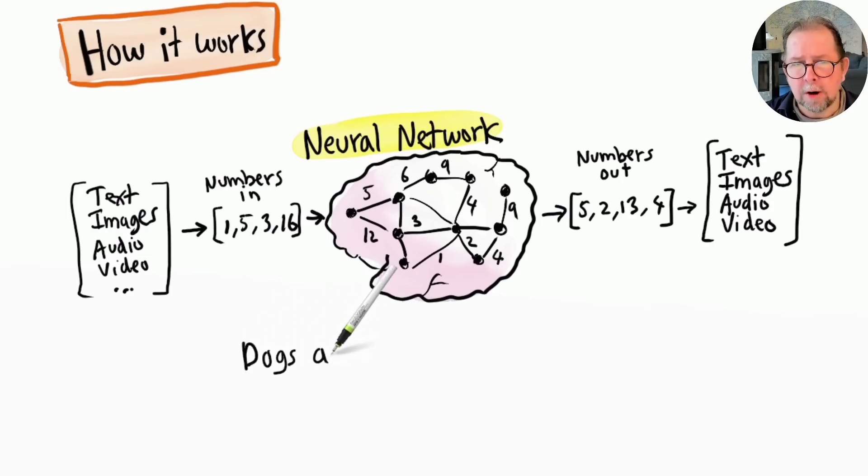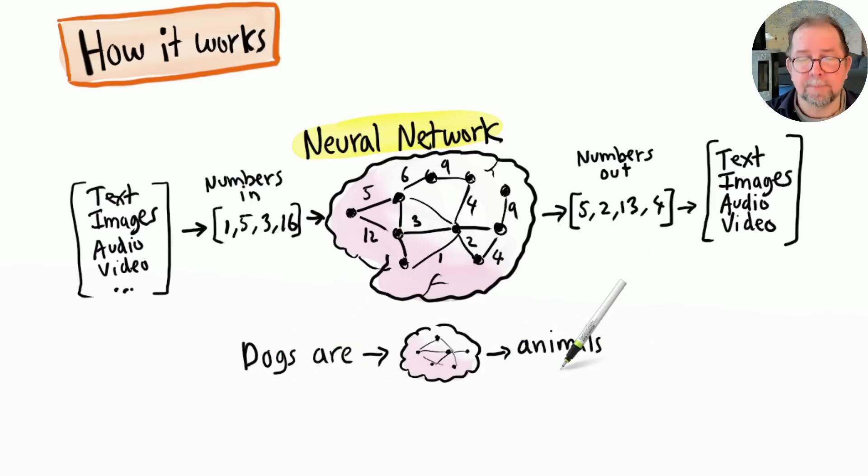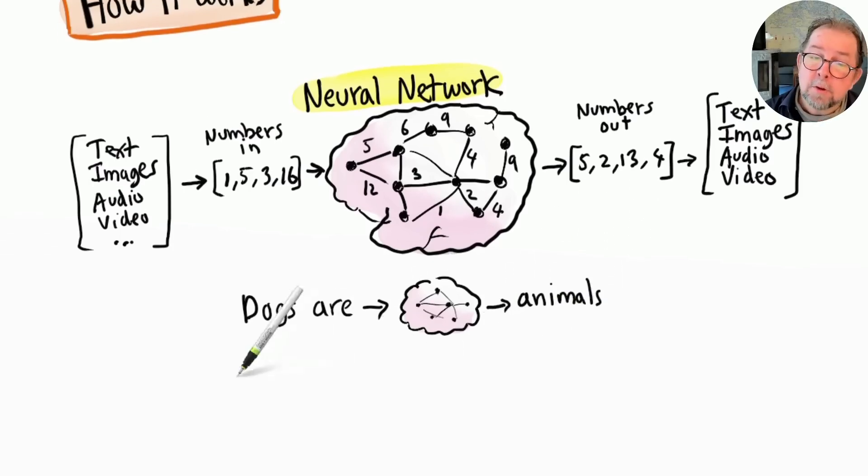So let's say I write "dogs are." When I send that to a large language model, that gets converted to numbers, processed by the neural network, and then the resulting numbers are converted back into text - in this case, the word "animals." Dogs are animals. So yeah, this is basically a guess-the-next-word machine.